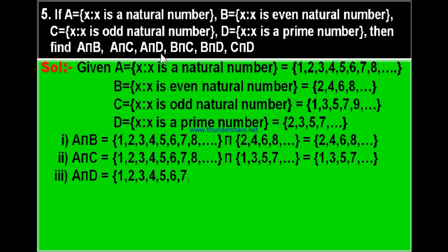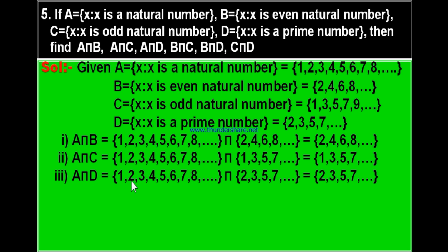Third part: A intersection D. A = {1, 2, 3, 4, 5, 6, 7, 8, ...} intersection D = {2, 3, 5, 7, ...}. The common elements are {2, 3, 5, 7, ...}. Therefore A intersection D equals {2, 3, 5, 7, ...}, which is set D.